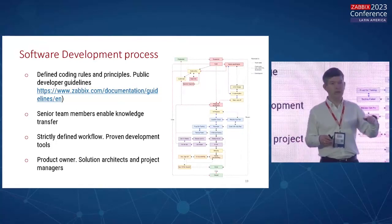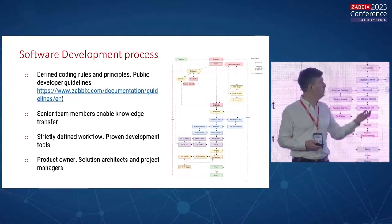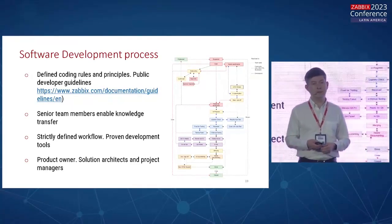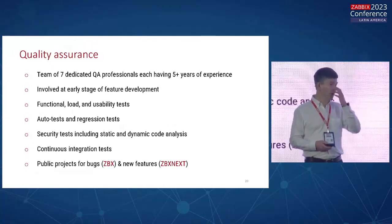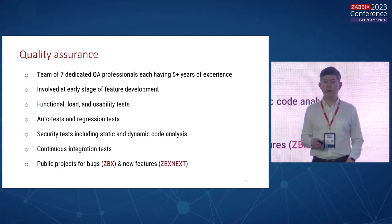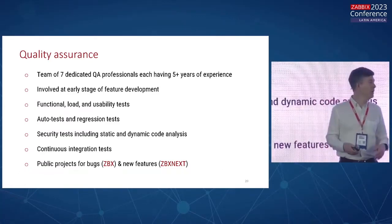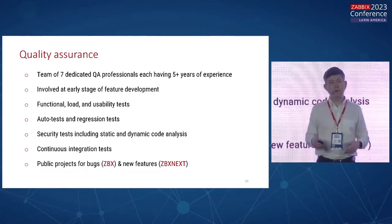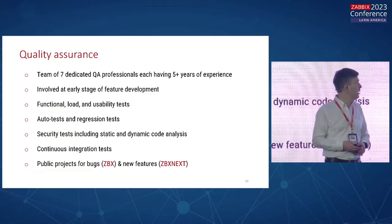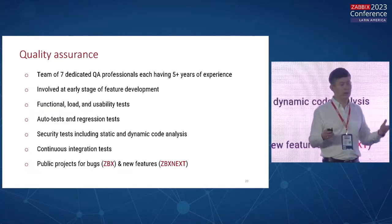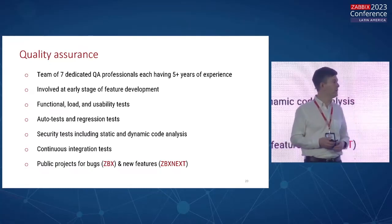This process ensures the quality and security of the Zabbix product, and we follow our coding guidelines with many automations happening in between. Speaking about quality assurance, at this moment we have seven people in our QA team — completely independent of the dev team. They test whether everything works fine, do automation for tests, functional load and usability tests, manual testing, regression testing, and also use automation tools for static and dynamic code analysis. It's all automated to ensure we deliver the highest quality software.